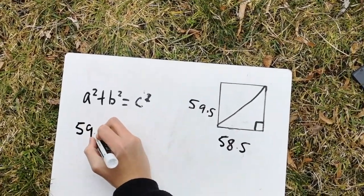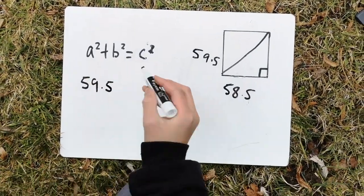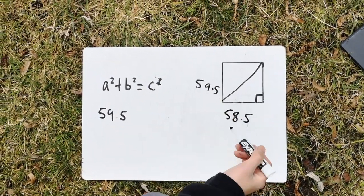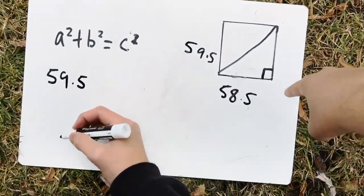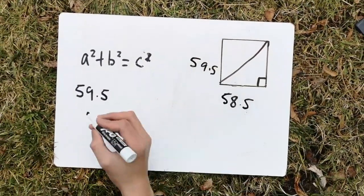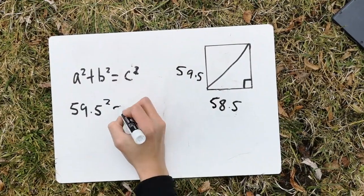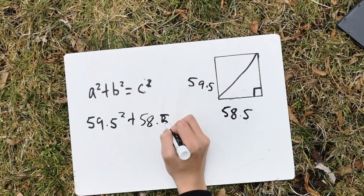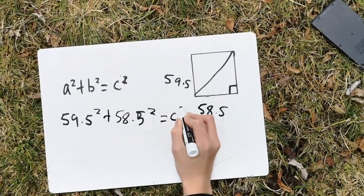Wait, wait, how do we know which one is the hypotenuse? Oh, c squared is always the hypotenuse, and then a squared or b squared is always the width and the length. Also, is it because it's across here? Yes, it is. So, 59.5 squared plus 58.5 squared equals c squared.